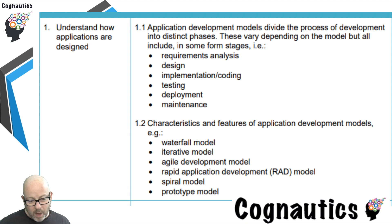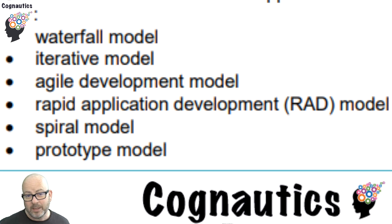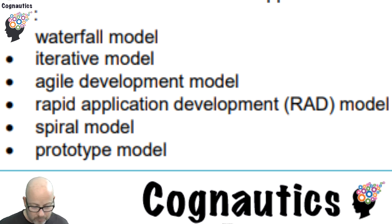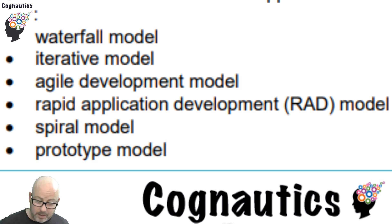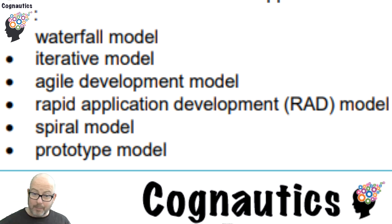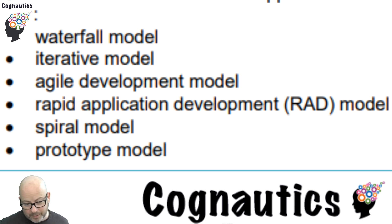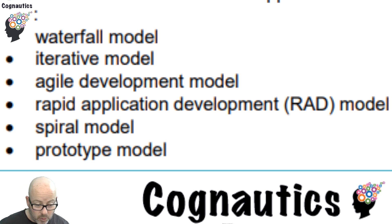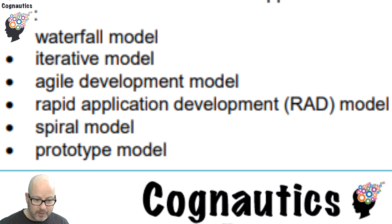For P1, all you need to do is understand and describe one model. There's a list of models — waterfall, iterative, agile, rapid, spiral, prototype — and we'll look at all of them. But for P1, I suggest you choose waterfall, or whichever model you plan to use when you create your app in unit six. When we get to M1, you'll need to describe more than one model, but for P1 you just need to describe one. In the next video, we'll have a look at the waterfall model.